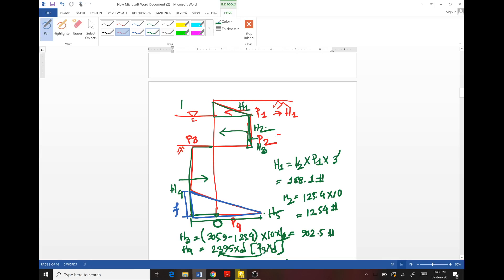For H1, the lever arm will be the total depth of embedment D plus 10 feet plus one-third of 3, which means D plus 11 feet.